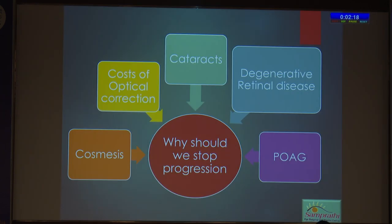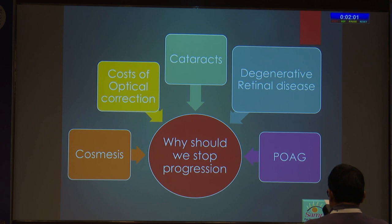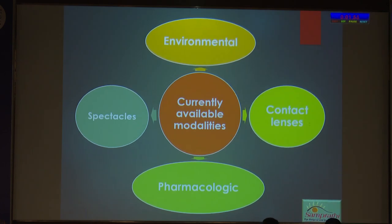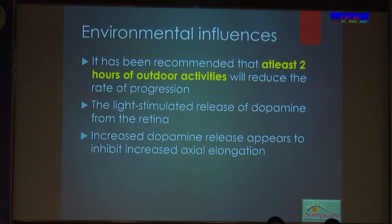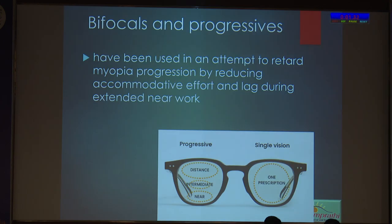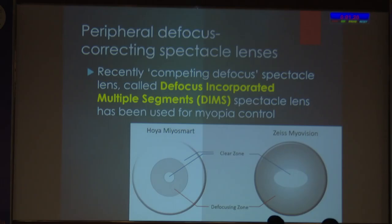A word about control of progression: progressive myopia has become a big problem now, and the most important reason is that myopic macular degeneration has been hypothesized to become the most common cause of irreversible blindness in the future. That's why we should focus on preventing the progress of myopia. The currently available modalities include spectacles and contact lenses, but now there is more emphasis on environmental and ecological modifications. At least 2 hours of outdoor activities has been shown to have a protective effect because it is supposed to release dopamine, which helps prevent elongation of the eyeball.